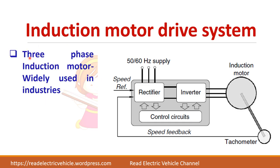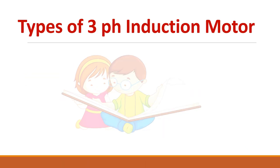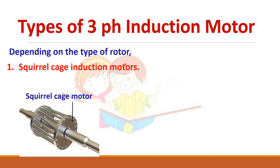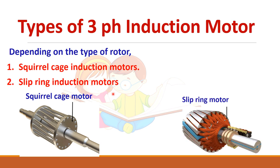Out of the two types of induction motor — single phase and three phase — three phase induction motor is widely used in industries. There are two types of three phase induction motor depending upon the type of rotor: the squirrel cage induction motor and the slip ring induction motor.